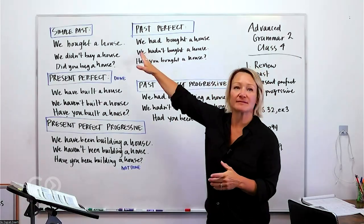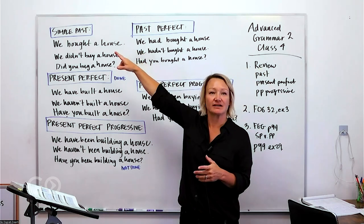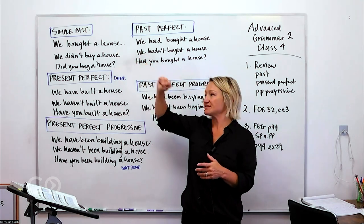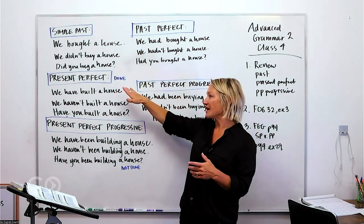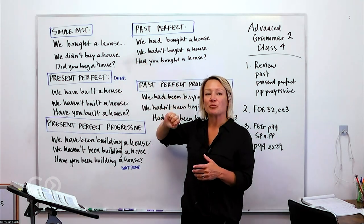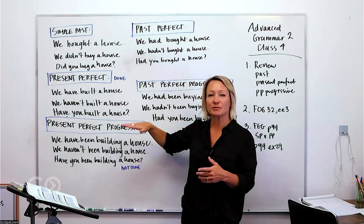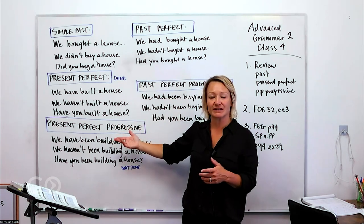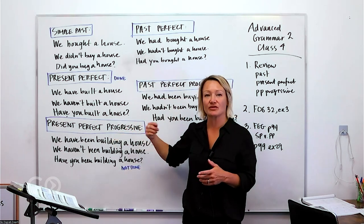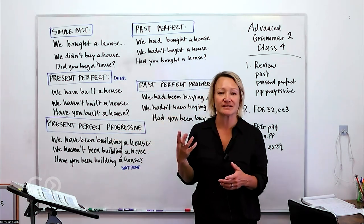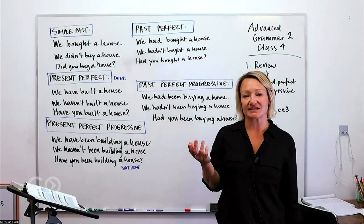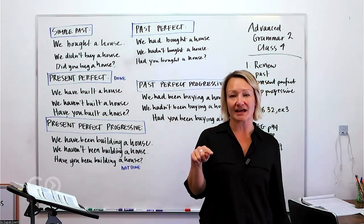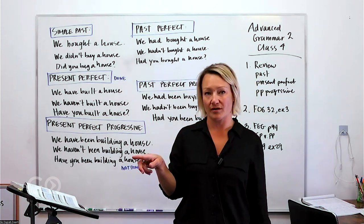So we have simple past here — we've got three examples. Then we have present perfect, and present perfect progressive right here. The progressive or continuous tenses always have the -ing form.